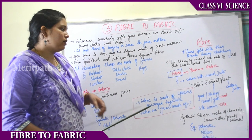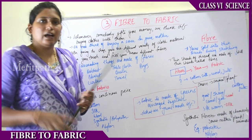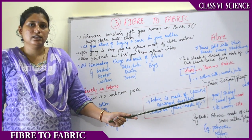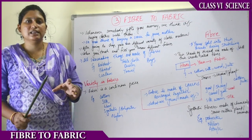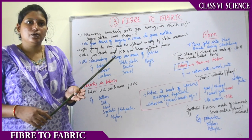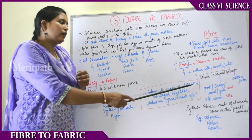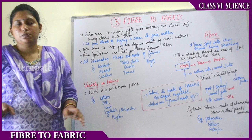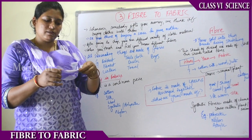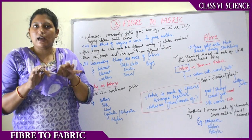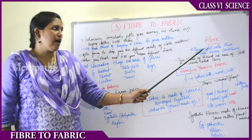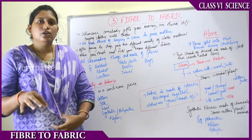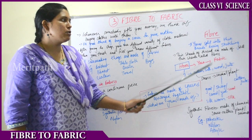Fabric is made up of yarns arranged together. Yarns are nothing but a group of threads. When we talk about what yarns are made of — if you take a cloth piece and stretch it, you can see thread-like structures coming out. So yarns split into thin threads during stretching. This shows that yarns are made up of a lot of thin threads.